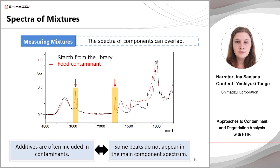Now we look at the case of mixed contaminants. In real-life analysis, there will normally be more than one component. The slide shows an example of searching the standard library for food contaminants in a sample. The sample spectrum, shown in red, almost matches the spectrum for starch. However, due to the presence of lipids and other substances, it differs from the search result — the split peak near 2900 is large and there is a sharp peak at 1720. Because the spectrum includes additives as well as the main component, it is important to obtain a large amount of spectral data for more accurate qualitative analysis.